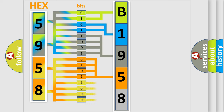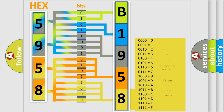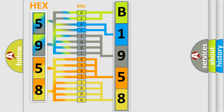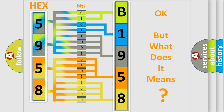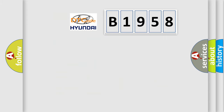A single byte conceals 256 possible combinations. We now know in what way the diagnostic tool translates the received information into a more comprehensible format. The number itself does not make sense to us if we cannot assign information about what it actually expresses.